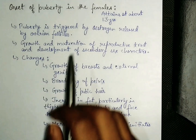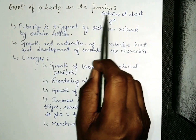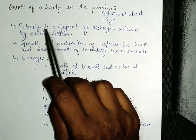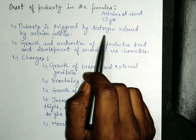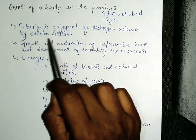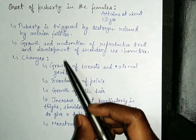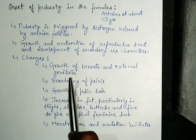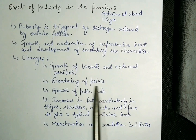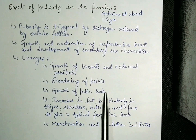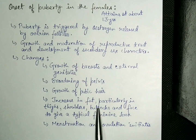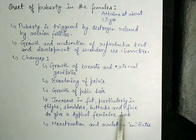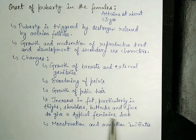Females attain puberty at about 13 years of age, and this puberty is triggered by estrogen released by ovarian follicles. The changes observed in females at puberty include growth of breasts and external genitalia, pelvis broadening, growth of pubic hair, and an increase in fat mainly in the thighs, shoulders, buttocks, and face to give a typical feminine look. Menstruation and ovulation also initiate during puberty.